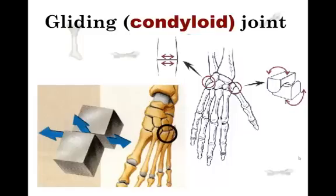The gliding, or condyloid, joint is made up of the bones of your wrist and the bones of your ankle. They glide over each other, and there are several bones there as you can see.